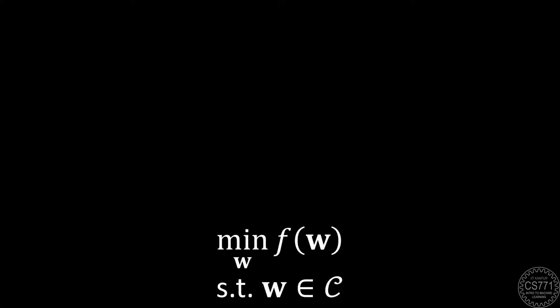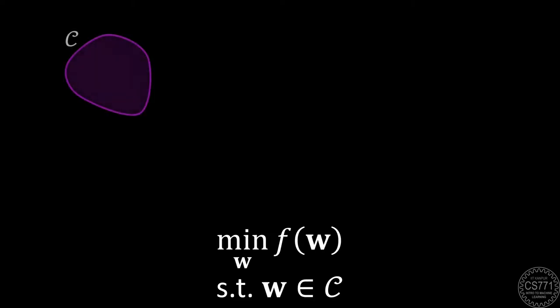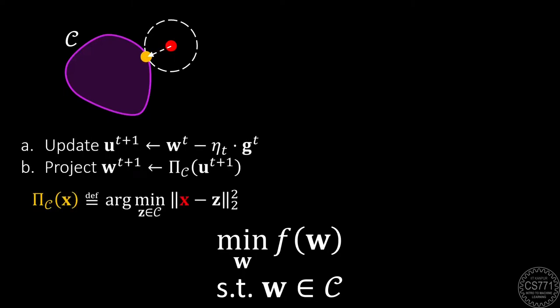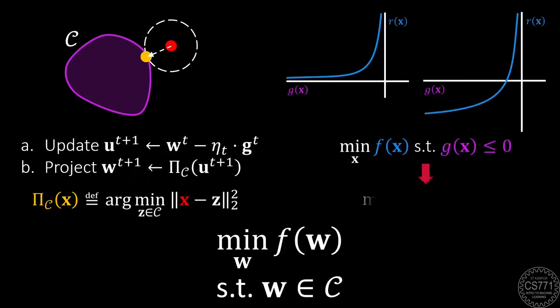Our last discussion explored a couple of techniques to solve optimization problems that have constraints in them. The first was the projected gradient descent method that used a projection step to undo any constraint violations due to the descent step. The second was the barrier method that hid the constraints inside the objective by using approximate barrier functions such as the inverse barrier and the logarithmic barrier, yielding an unconstrained optimization problem solvable using first-order optimality or standard gradient descent techniques.